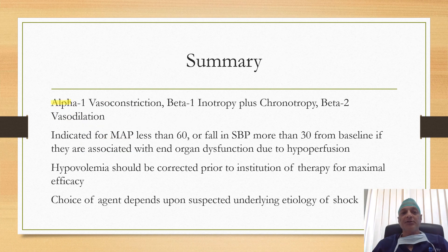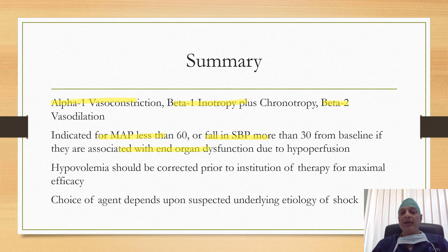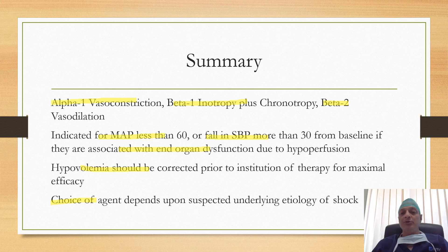To sum up: alpha-1 receptor stimulation causes vasoconstriction; beta-1 stimulation causes inotropic and chronotropic action; and beta-2 stimulation causes vasodilation. The indications for these agents include mean arterial pressure less than 60 or a fall in systolic blood pressure more than 30 from baseline, if associated with end-organ dysfunction due to hypoperfusion. Merely low blood pressure is not an indication if not associated with end-organ dysfunction. Hypovolemia should be corrected prior to initiation of therapy, and the choice of agent depends upon the suspected underlying etiology of shock.